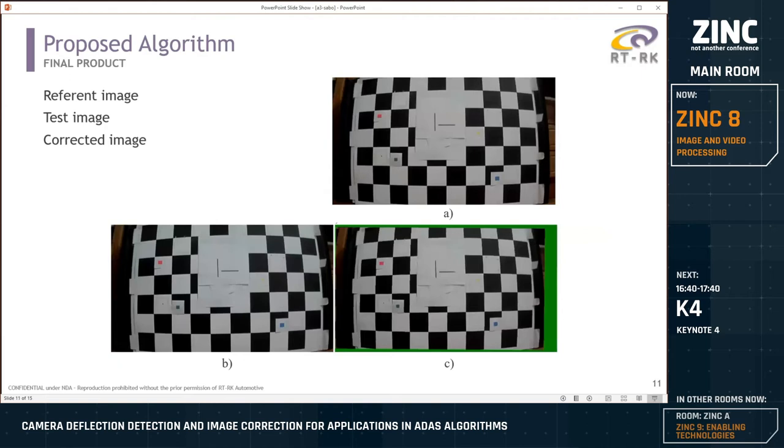On these images, we can see the final product of my solution. Image A is a reference image, Image B is a test image before compensation, and Image C is a test image after compensation and reconstruction of missing elements.